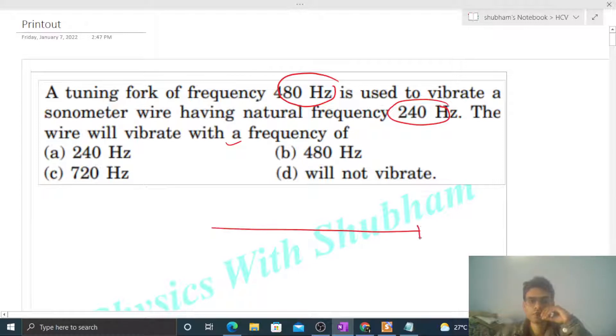So we have a sonometer wire with natural frequency 240 Hz, and we have a tuning fork with frequency 480 Hz. Now when this tuning fork vibrates the wire, waves are generated.